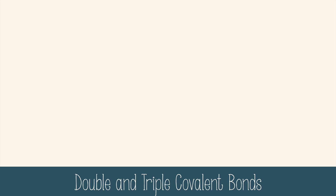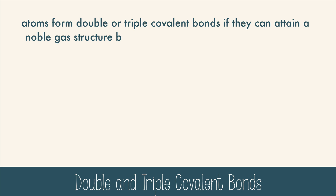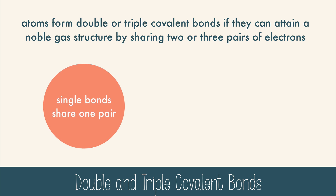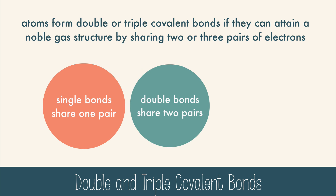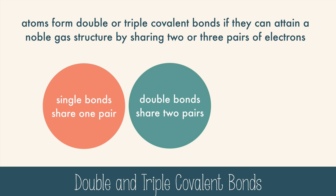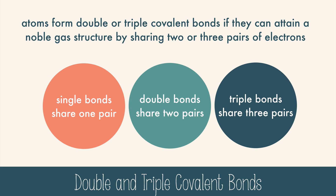Sometimes atoms need to form more than one covalent bond. Atoms form double or triple covalent bonds if they can attain a noble gas structure by sharing two pairs or three pairs of electrons. Single bonds share one pair of electrons — that's two electrons total. Double bonds share two pairs of electrons, four electrons total, and triple bonds share three pairs of electrons, six electrons total.